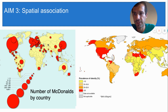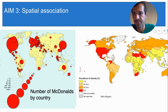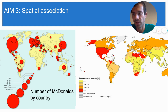I do see spatial association in some places, like the US — the US has a lot of McDonald's and has a lot of obesity. But I also see a lot of countries with low or no spatial association, like France and Brazil. Both of those countries have medium levels of obesity but they have a lot of McDonald's. And then there are countries like Algeria that show a different pattern as well.